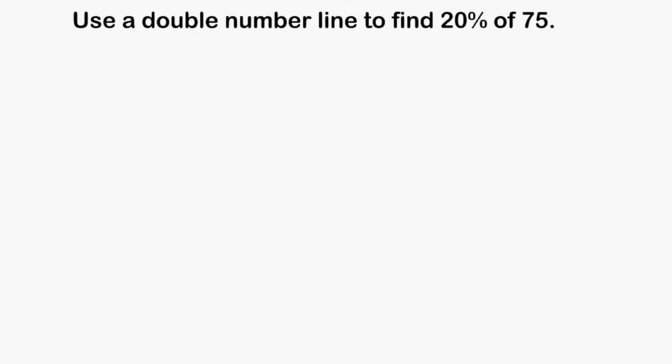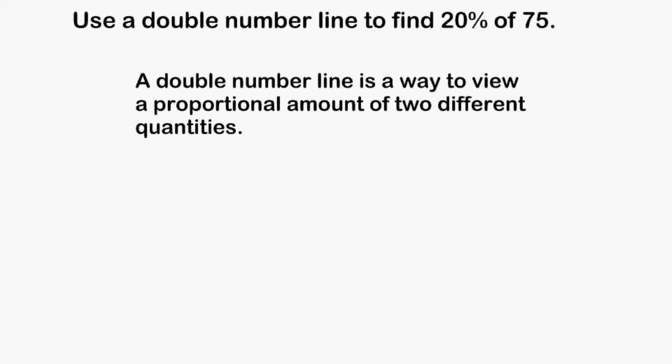In this tutorial we are going to use a double number line to find what 20% of 75 is. A double number line is a way to view a proportional amount of two different quantities.